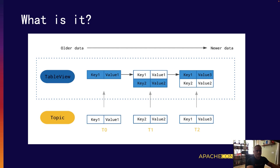Let's look at it visually. A topic can contain multiple messages with the same key — in this case, key 1. The Table View treats the data as a large changelog, meaning that newer messages with key 1 are treated like a database update command. This new value replaces the older value conceptually, and this is reflected in the Table View. So if you were to do a lookup for key 1 at time t0, you would have gotten value 1, but doing the same lookup at time t2 would return the newer value, value 3.